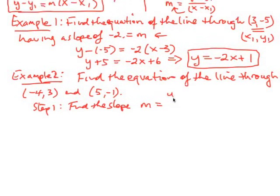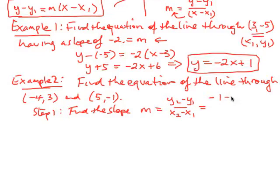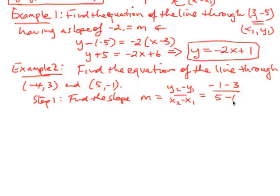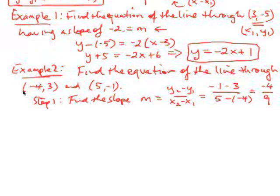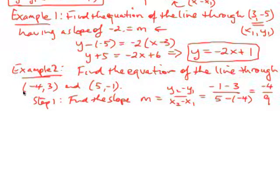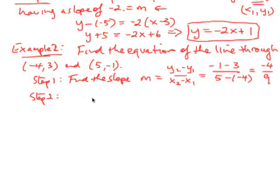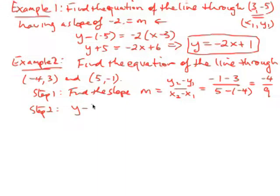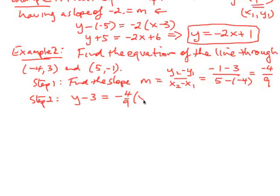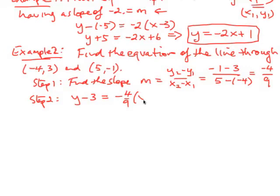It doesn't matter which point we choose as the second one, so let's compute: negative 1 subtract 3 over 5 subtract negative 4, which gives negative 4 over 9. Now we have two points but we only need one for point-slope form — choose whichever you like. Step 2, point-slope form: y minus y₁ equals m times x minus x₁. Using the first point (-4, 3): y minus 3 equals negative 4 over 9 times x subtract negative 4.